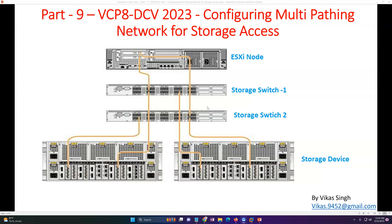This is how you design a multipathing environment for storage connectivity. Make sure you have redundant and multiple paths to access your storage. You can put additional fiber switches in between and use two or four ports on the ESXi host side. Based on how critical your infrastructure is and your budget, you can design accordingly.